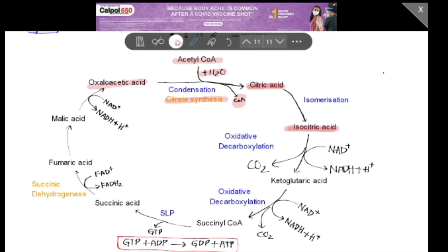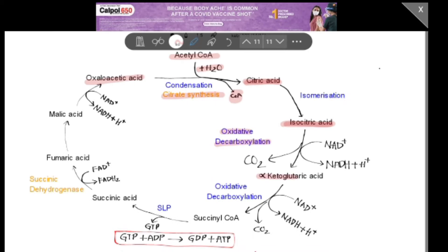Isocitric acid undergoes oxidative decarboxylation to form alpha-ketoglutaric acid. Here, NAD+ changes to NADH + H⁺, and a CO₂ molecule is released. In the next step, alpha-ketoglutaric acid converts to succinyl coenzyme A by oxidative decarboxylation. Here also, one CO₂ is released and NAD+ converts to NADH + H⁺.